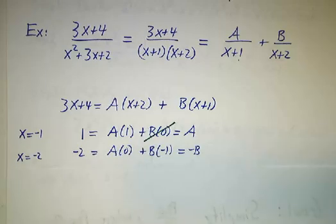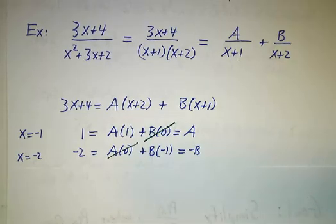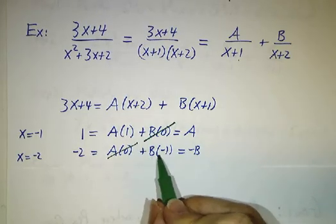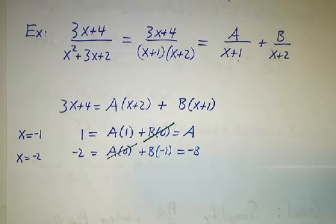If you plug in x equals negative 2, then you get A times 0. That doesn't contribute. Plus B times negative 1. So we get negative 2 is negative B, or B equals 2.